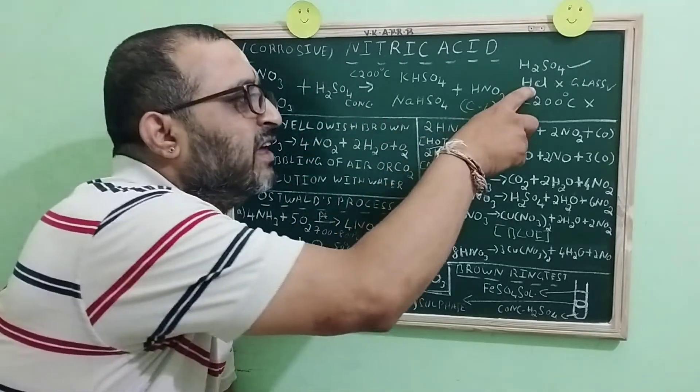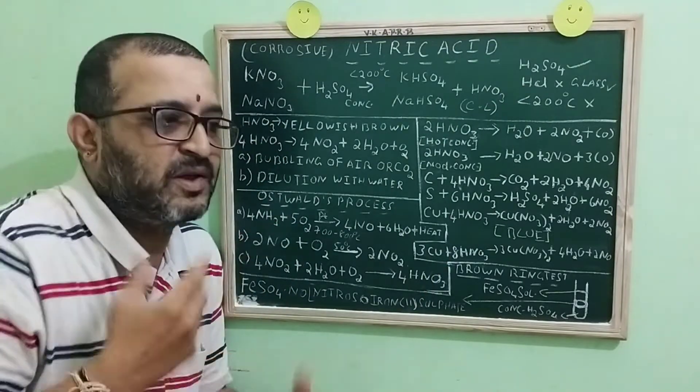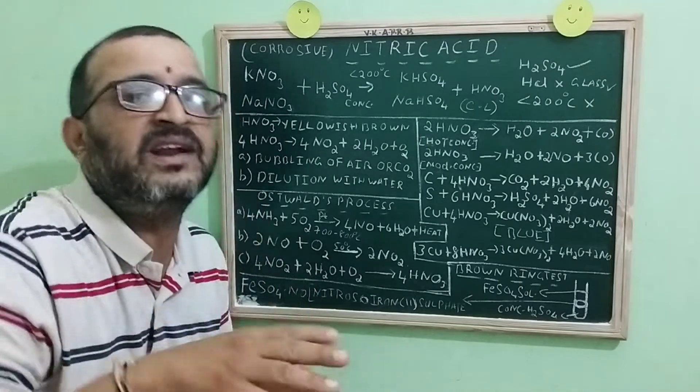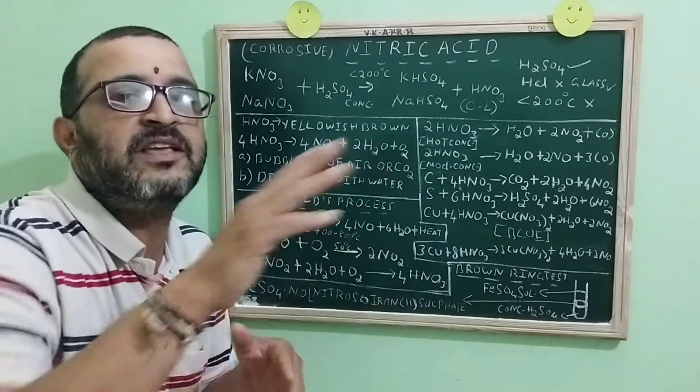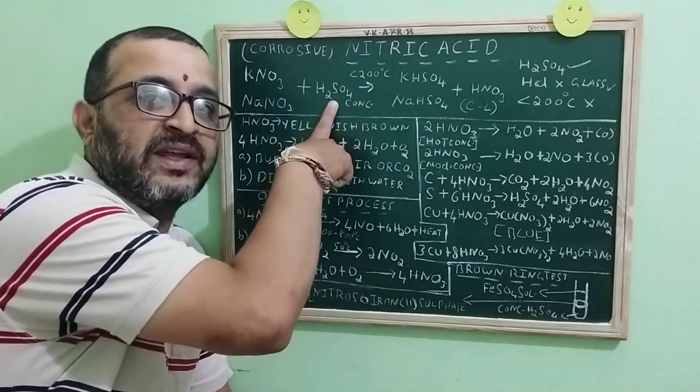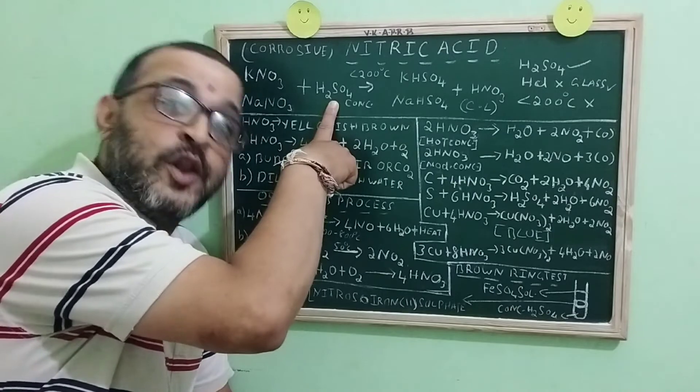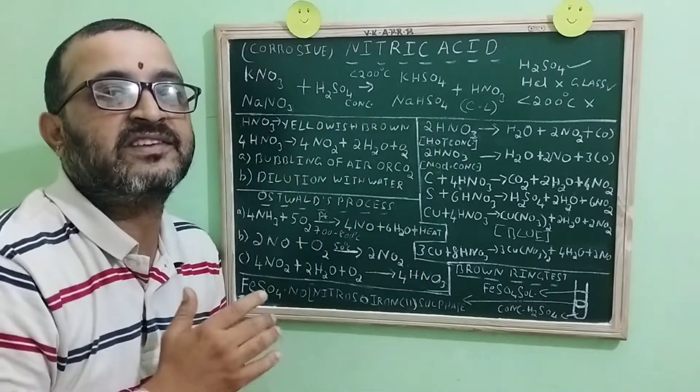We are using sulfuric acid concentrated, right? Can we use HCl instead of that? No. We cannot use HCl because HCl itself is a volatile acid. How can you use a volatile acid to displace one more volatile acid? That is not possible. That is why we take sulfuric acid, which is non-volatile. It displaces nitric acid, which is a volatile acid.